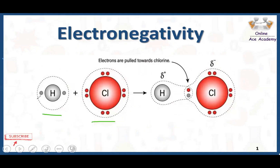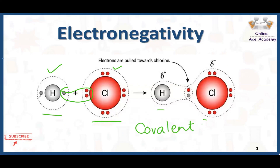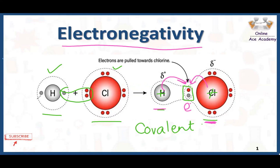Here we have hydrogen and chlorine — both are atoms. Everything in this universe wants to get stable and the same is true for atoms. These two atoms want to get stable and they will make a bond by sharing electrons; the bond they make is a covalent bond. The nucleus of both atoms will attract these electrons towards itself, and the ability of hydrogen and chlorine to attract these shared electrons towards themselves is called electronegativity.